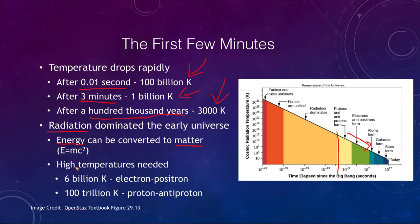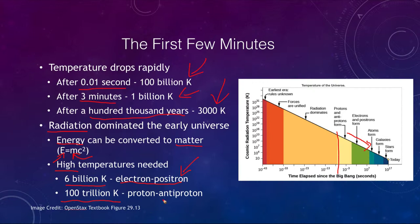We usually think of E = mc² in one direction — taking a small amount of mass to make a large amount of energy — but it works the other way around as well. We can take large amounts of energy and make small amounts of mass, but it requires very high temperatures. When the temperature is 6 billion Kelvin, you could create electron-positron pairs. You need even higher temperatures of 100 trillion Kelvin to produce proton-antiproton pairs, which was achievable in the very first fraction of a second of the universe.